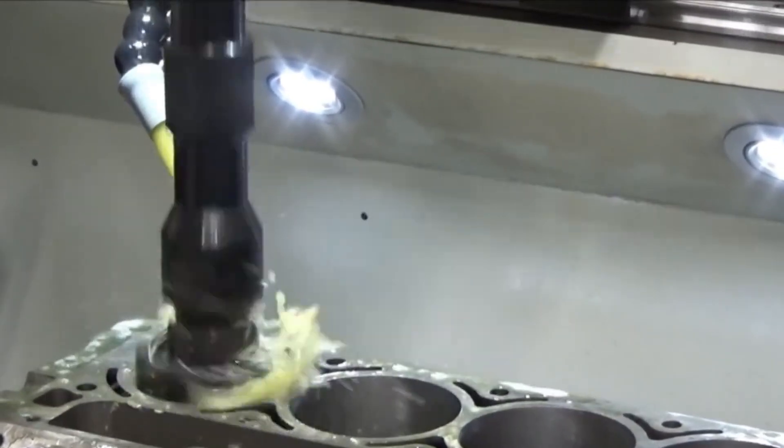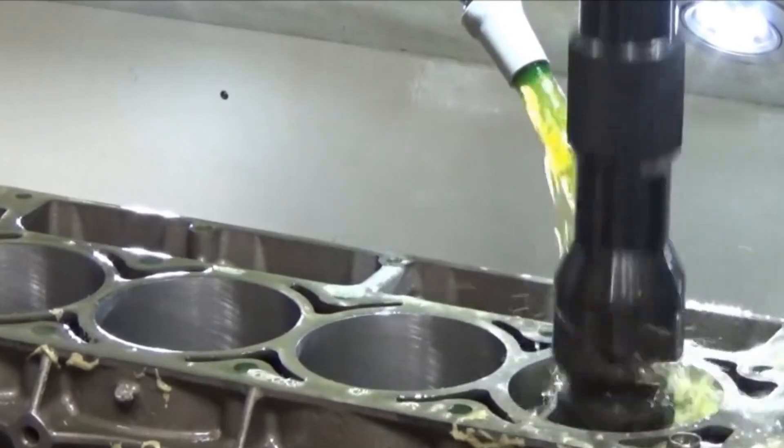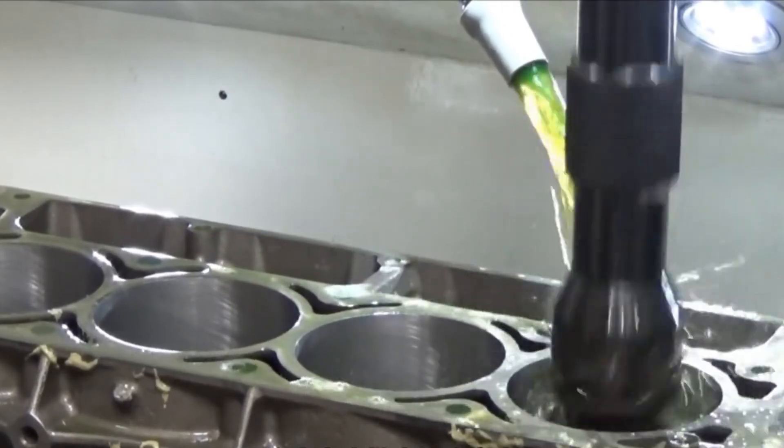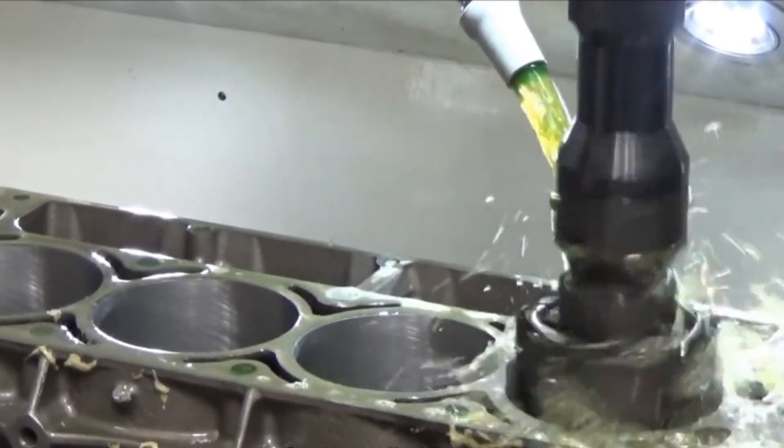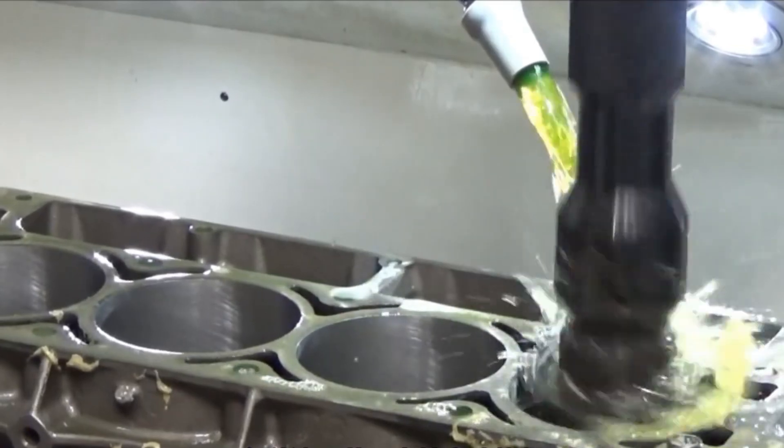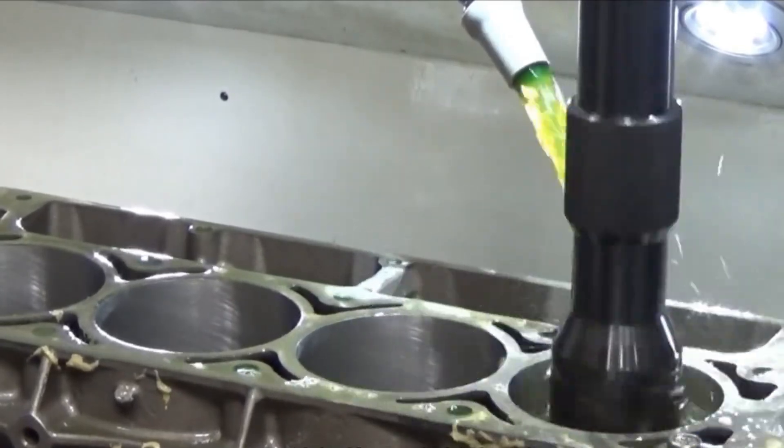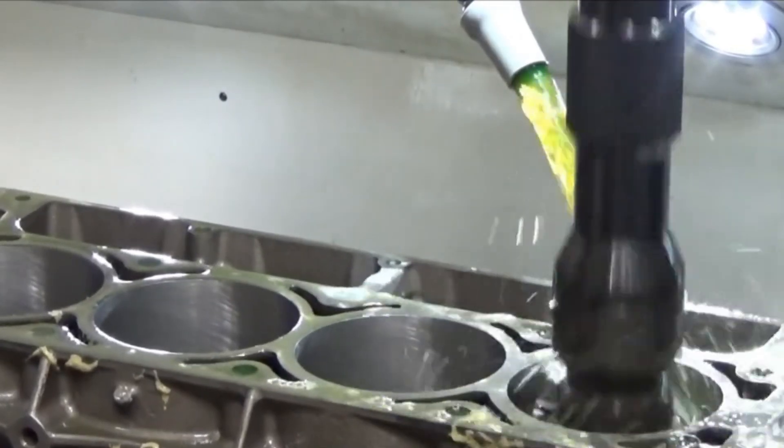Honing in mass production is widely used in the engine cylinder hole and various hydraulic devices in precision hole processing. Hole diameter range is generally larger.